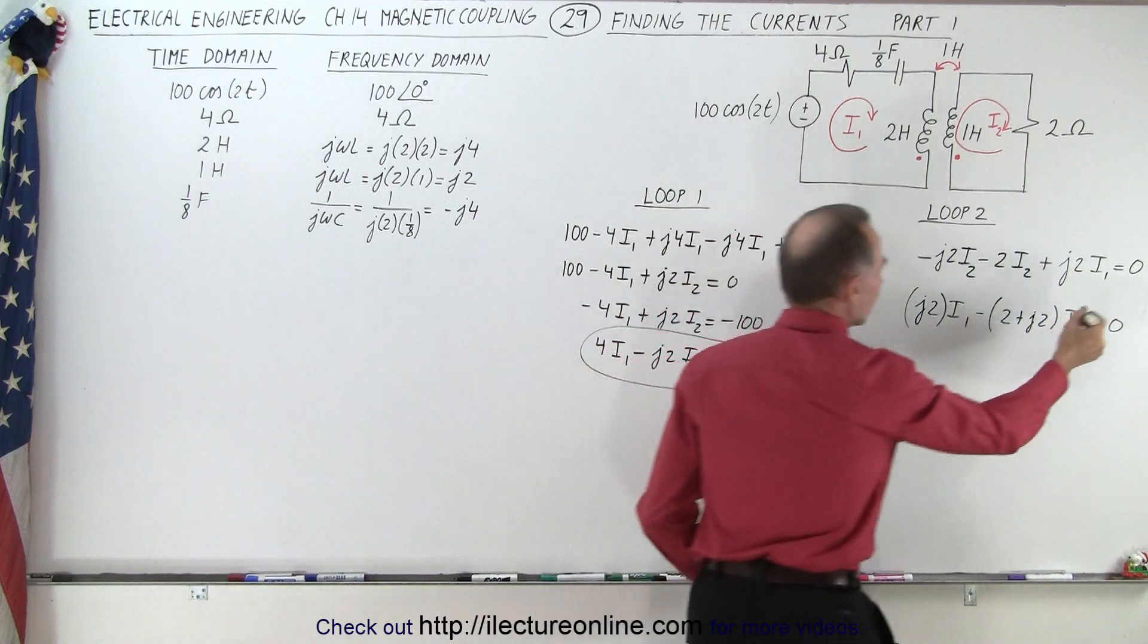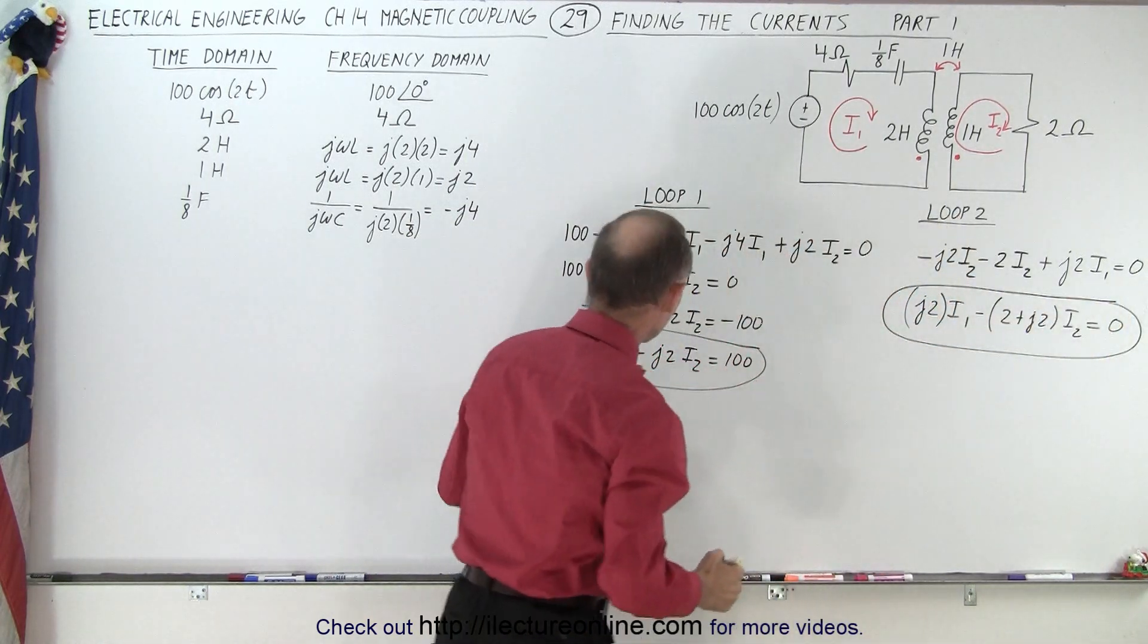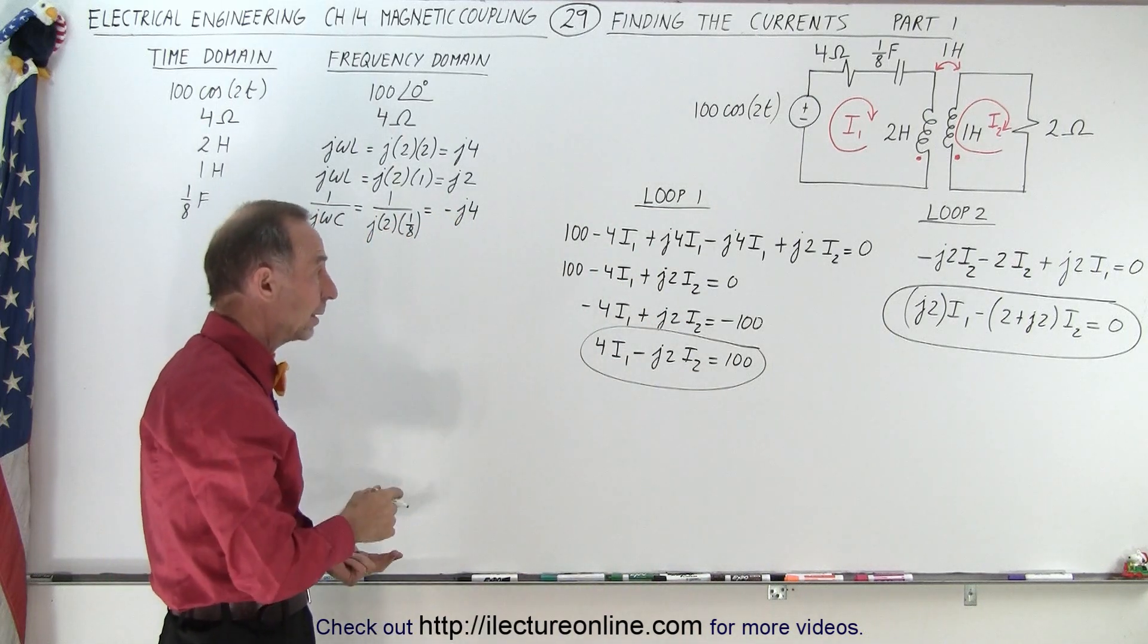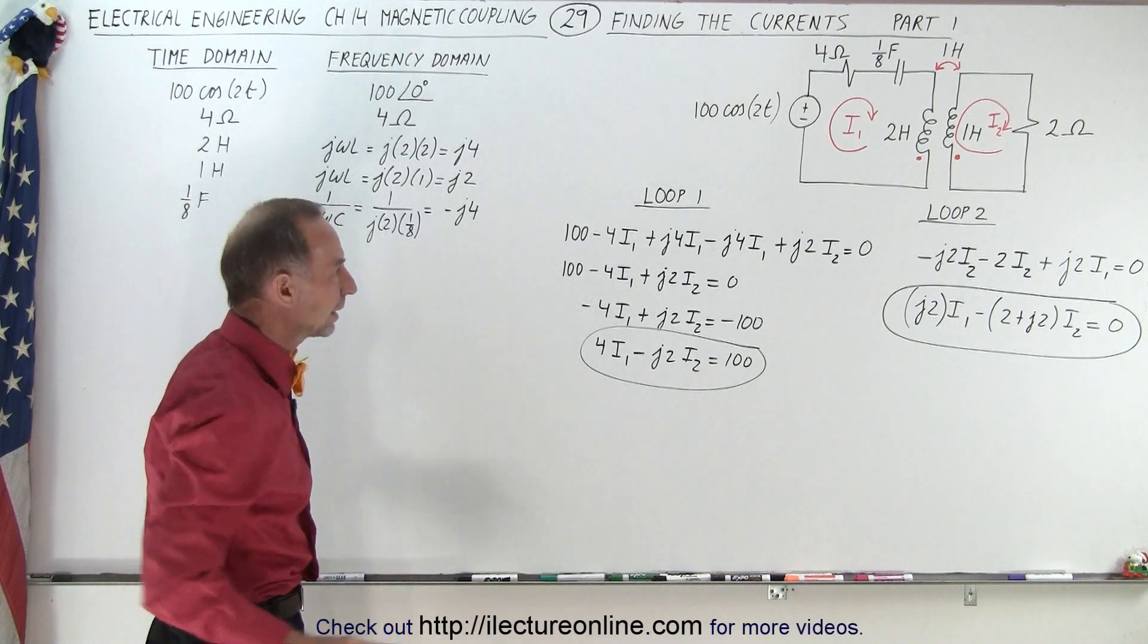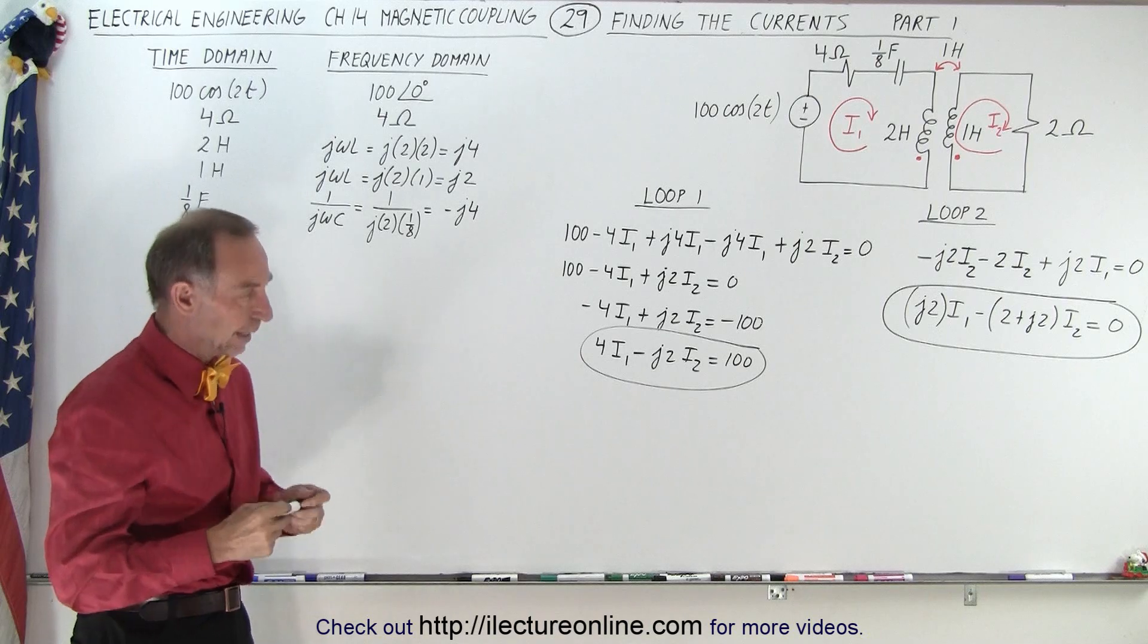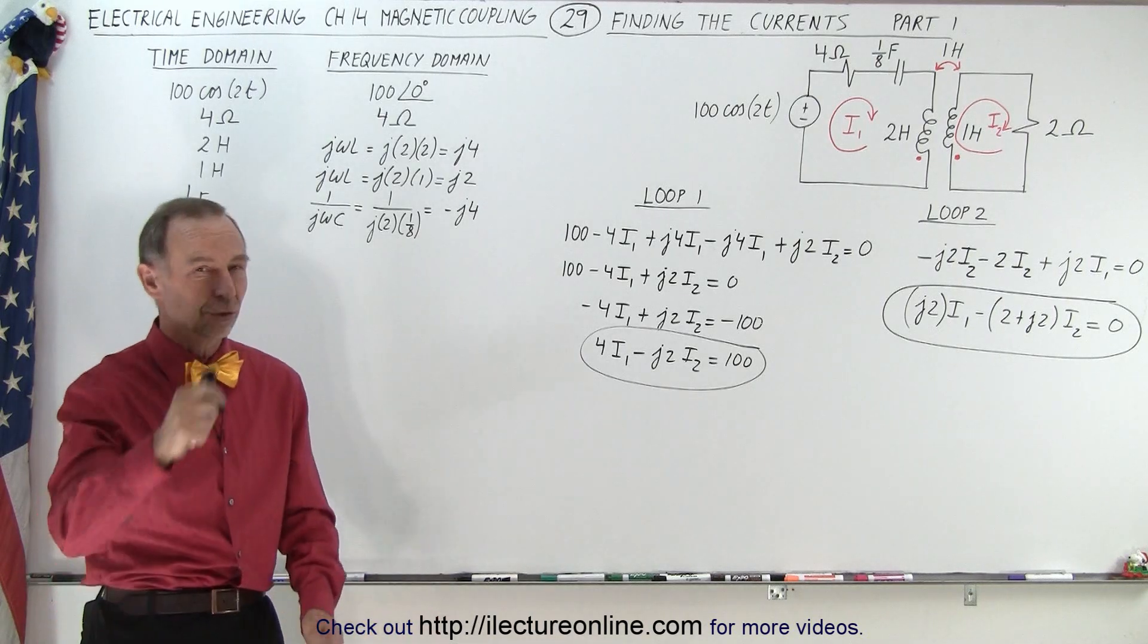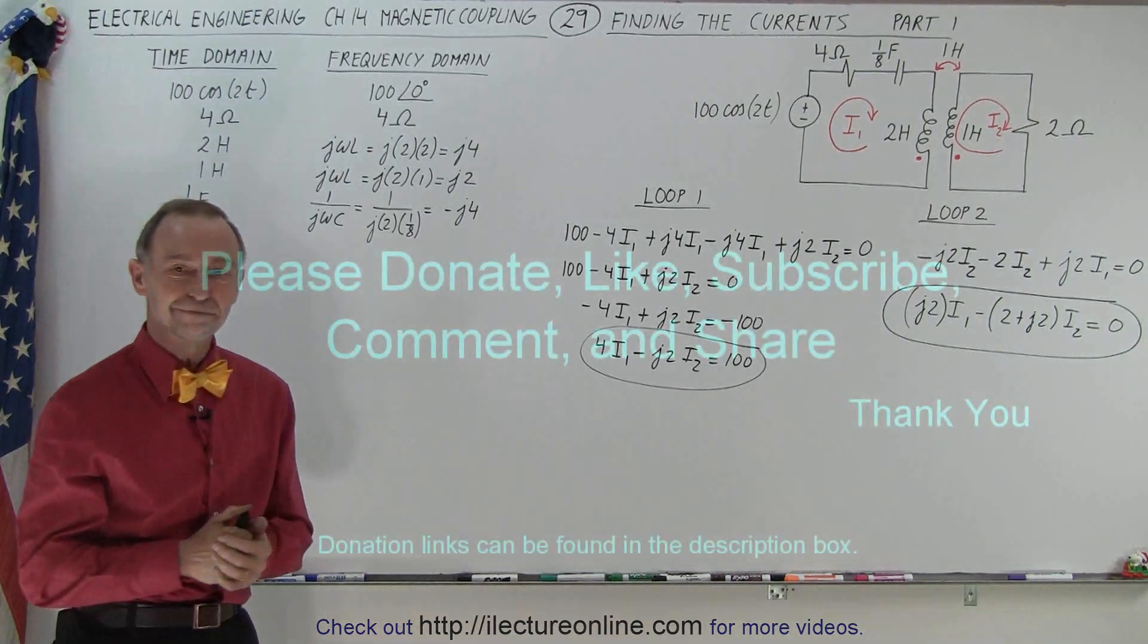And so once we have the two equations, we now can solve them simultaneously to solve for I1 and I2. And we'll do that on the next video, keeping things a little bit cleaner. I'll erase the board a little bit, make some more room, and then we'll use the method of determinants to solve for I1 and I2. So stay tuned and we'll show you how to do that. Thank you.